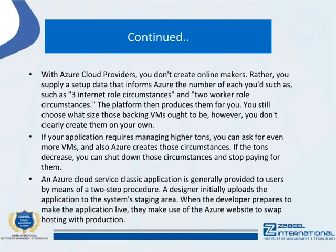An Azure Cloud Service Classic application is generally delivered to users through a two-step procedure. A developer first uploads the application to the staging area. When the developer is ready to make the application live, they use the Azure portal to swap staging with production.